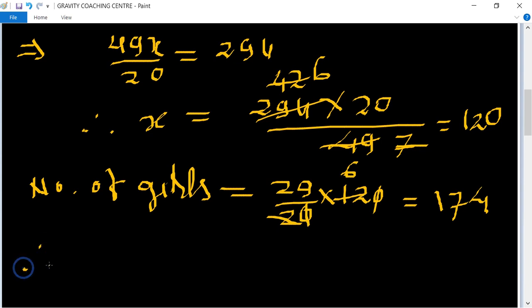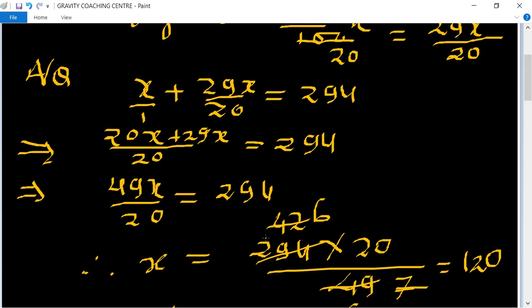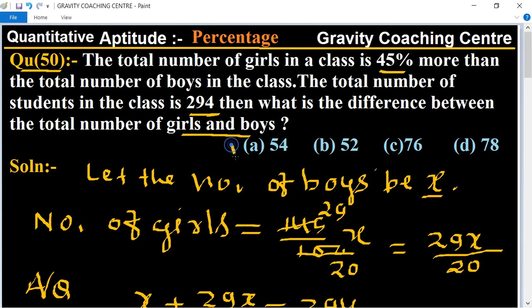Therefore their difference equal to 174 minus 120 equal to 54, which is the required answer. So option A is the right answer.